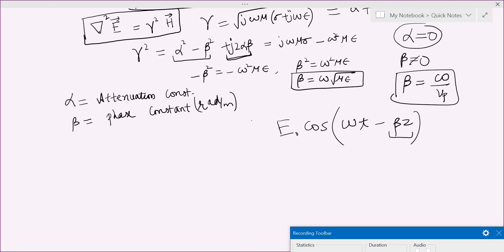Whereas this attenuation alpha, you will see later on, that will enter somewhere here which attenuates the signal. So that will see when there's a lossy media.